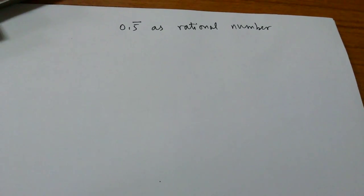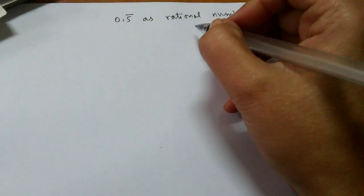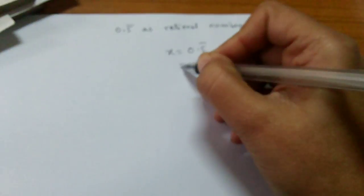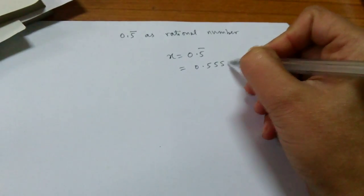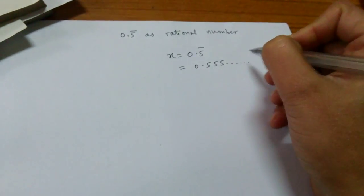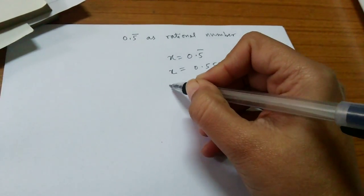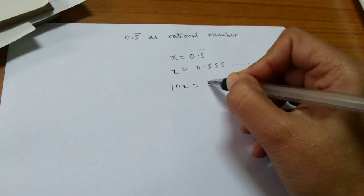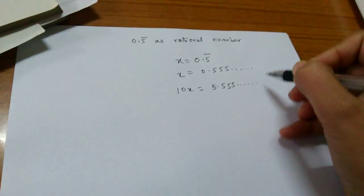Let us learn to express 0.5 bar as a rational number. Let x is equal to 0.5 bar, which is equal to 0.555 so on. Multiply both the sides by 10. We get 10x is equal to 5.55 so on.